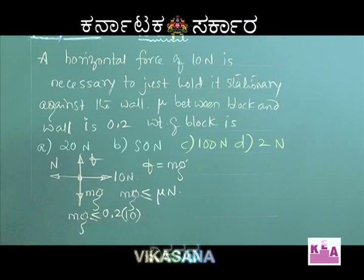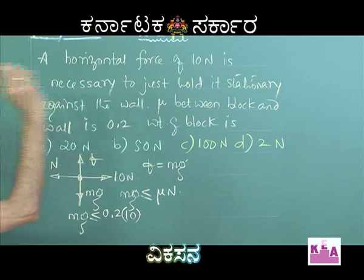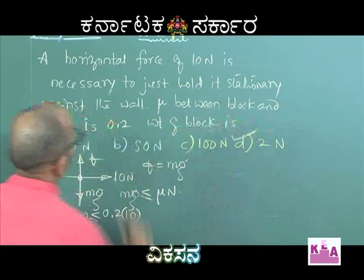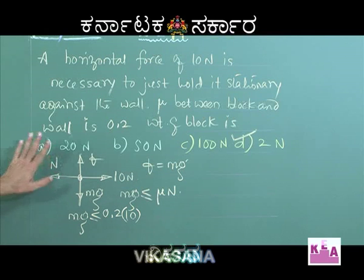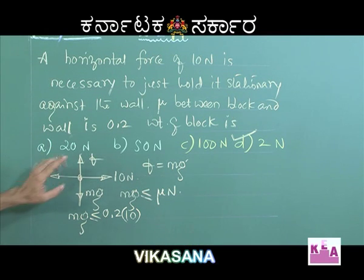So the fourth option is perfectly correct — the maximum weight that can be held stationary against the wall is 2 newtons.